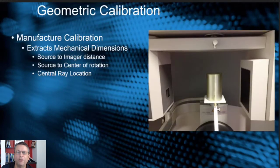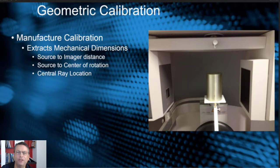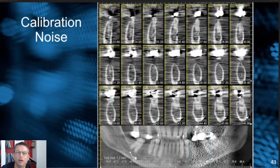A geometric calibration is something that the manufacturer can help you with. This is usually a cylinder that goes into your machine. Some manufacturers provide the cylinder for you, or they might have a tech come in and use the cylinder calibration. This particular calibration tool extracts mechanical dimensions of the machine, such as the source-to-image distance, the source-to-center-of-rotation, and the central ray rotation. These things help improve calibration accuracy.